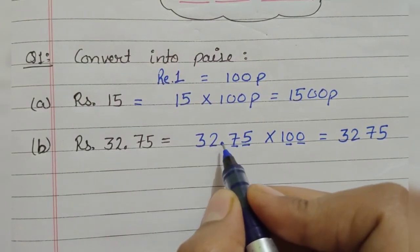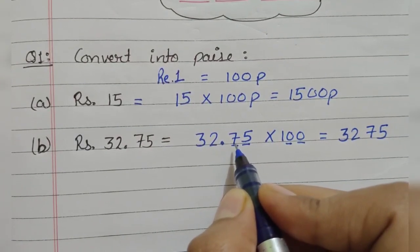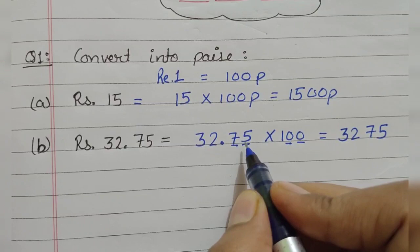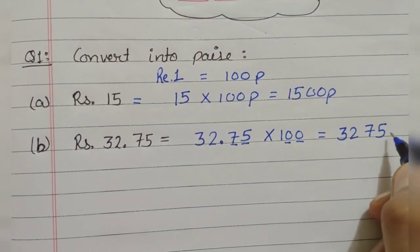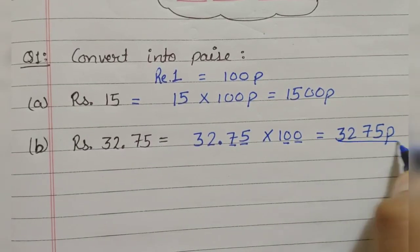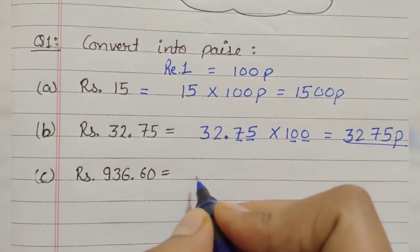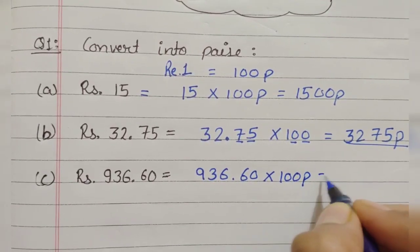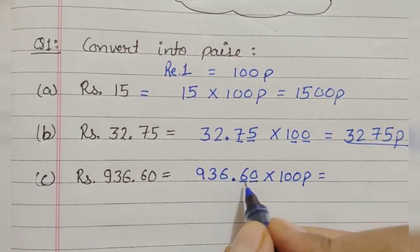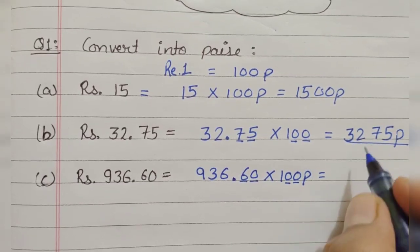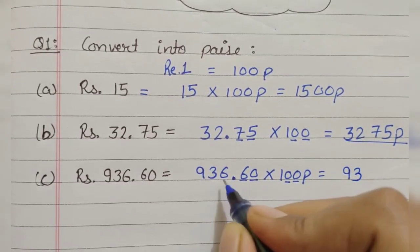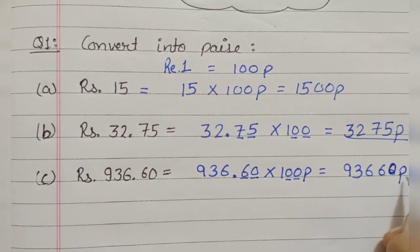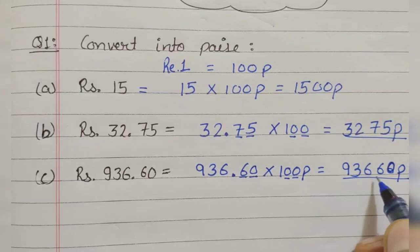These 2 zeros will overcome this decimal point because there are 2 digits after this decimal point and here we have 2 zeros. So these 2 zeros will replace these 2 digits, and the answer is 3275 paise. For better clarification, see one more part: here 936.60 multiplied by 100 paise. Now here, 2 digits after this decimal point get vanished with these 2 zeros, so the answer is 93,660 paise.